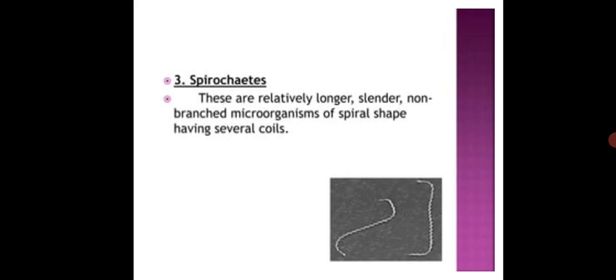Spirochetes: This is a relatively longer, slender, non-branched microorganism of spiral shape having several coils.